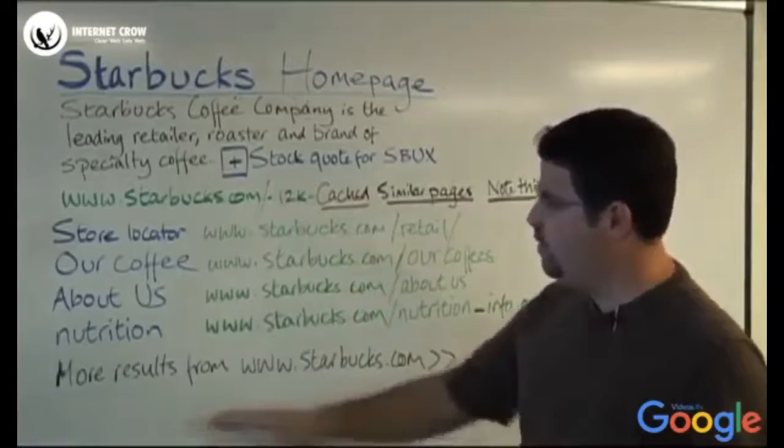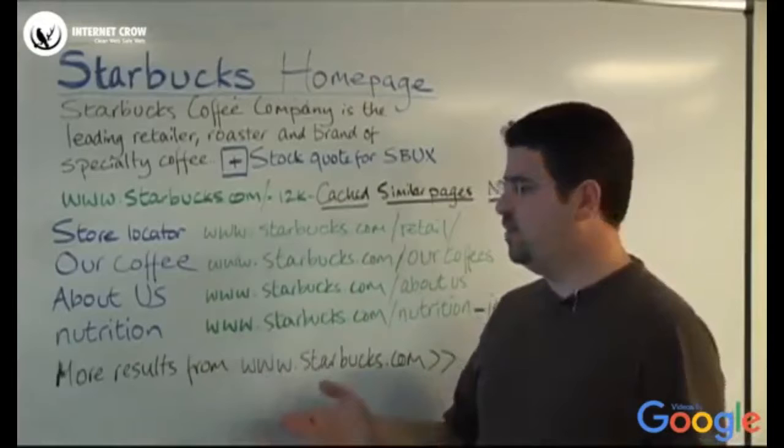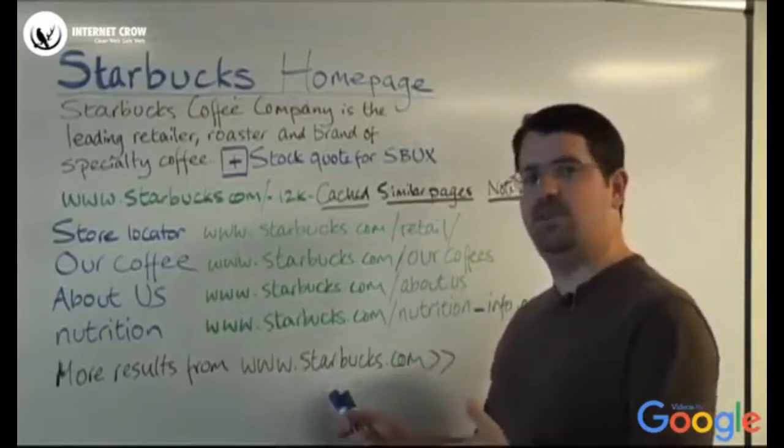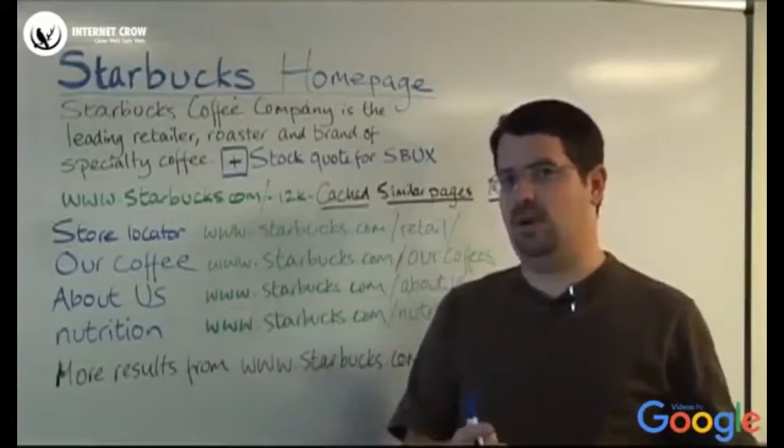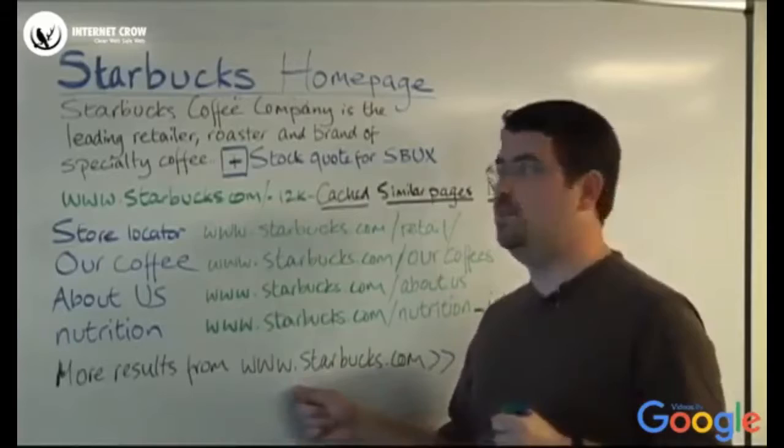And then when you get to the bottom, if we have a lot of results from a page, maybe we show one or two. And then we'll say, you know what, maybe you want to see more results from Starbucks. And what that lets you have is a little bit more diversity. So you can see one or two results from Starbucks. And then maybe you want to see other results for that query. And so that helps ensure diversity on the results page. And at the same time, lets you dive deeper if you want to.